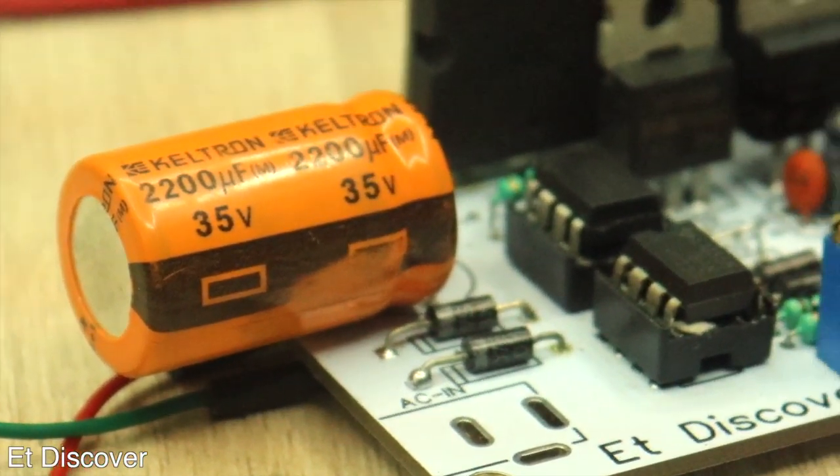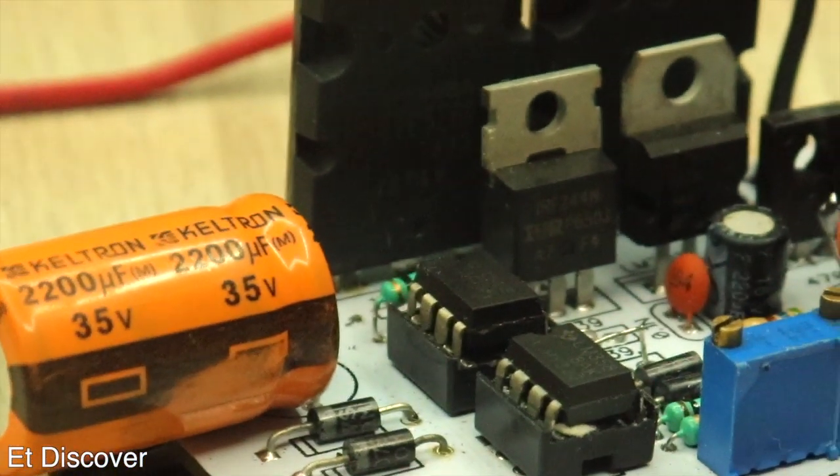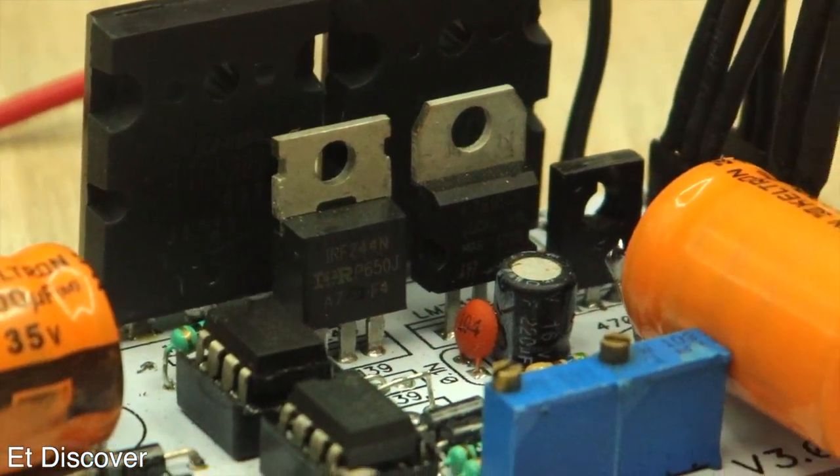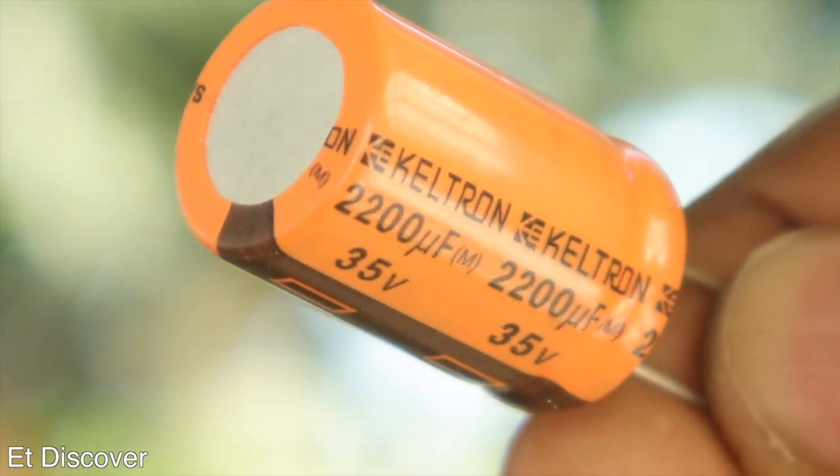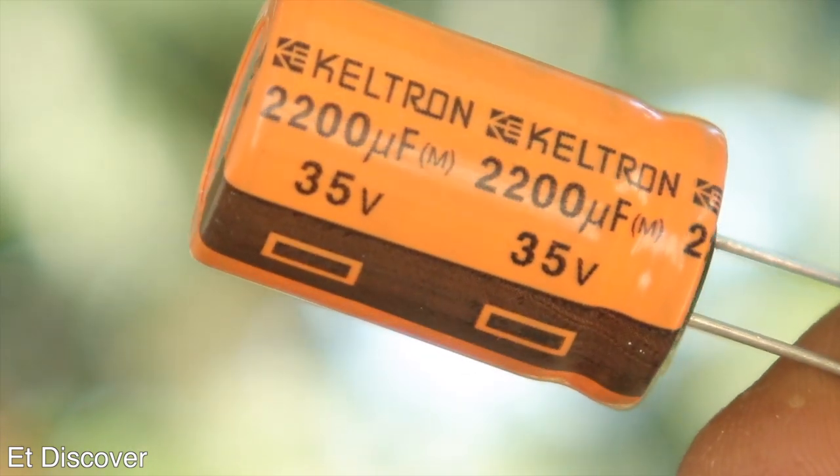At the end, the last step is the filtering section. Here I am using two capacitors. The first one is the input filtering capacitor and the second one is the output filtering capacitor. Both of those capacitors are 2200uF 50V capacitors.